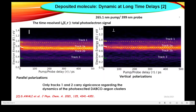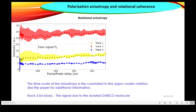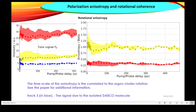When comparing the left and right panels of the total photoelectron signals, the intensities of tracks 1 and 2 don't have the same behavior as a function of the pump-probe time delay T. These differences appear between experiments that differ by the relative polarization direction of the pump and probe lasers, either parallel or perpendicular. Only tracks 1 and 2 carry significance regarding the dynamics of the photoexcited Dabco argon clusters. The TSD analysis as a function of the pump-probe time delay shows that the time scale of the anisotropy is correlated with the rotation of the argon cluster. It seems the polarization anisotropy effect is essentially sensitive to the rotation of the cluster. See the paper for additional information.